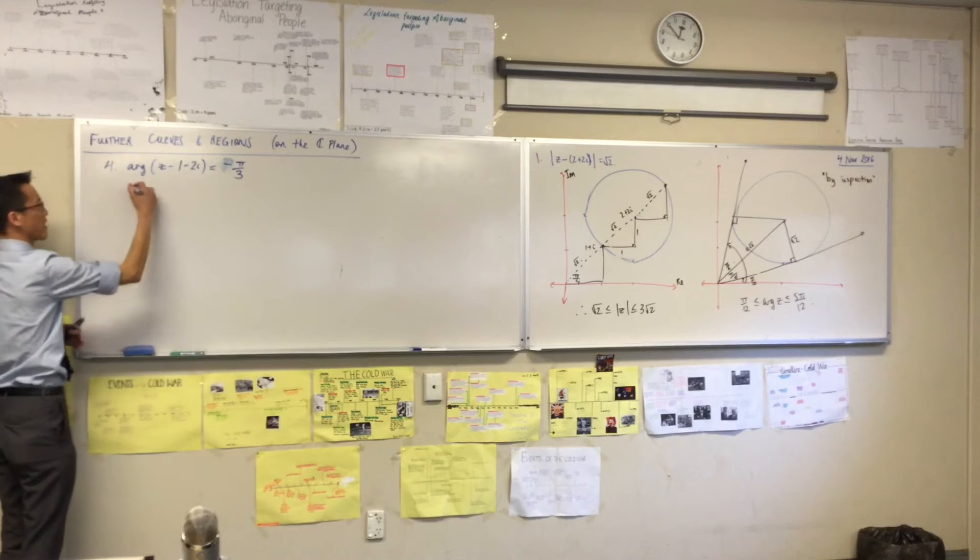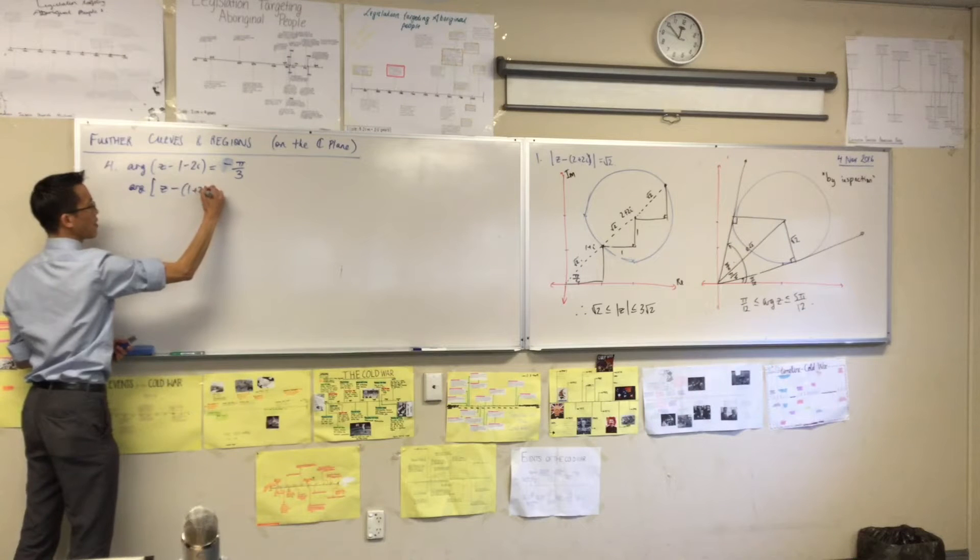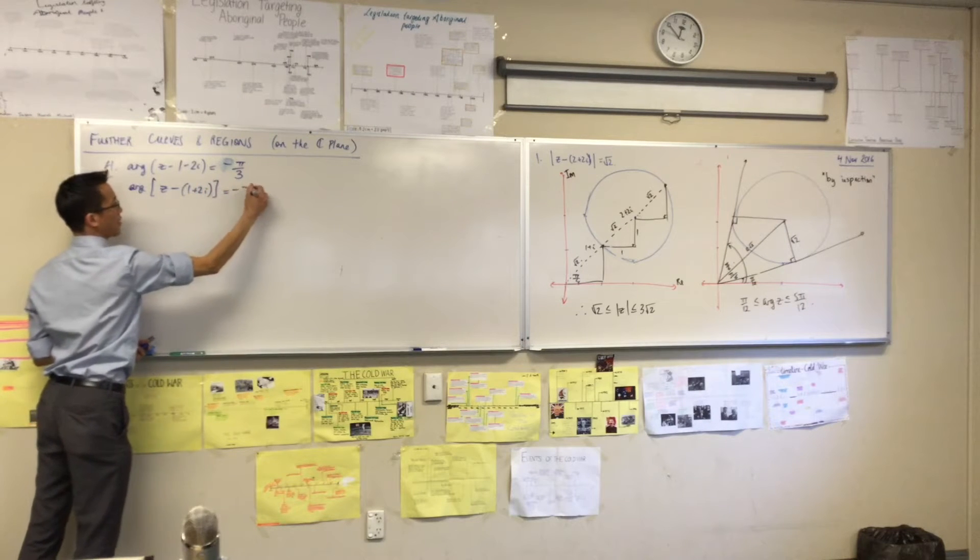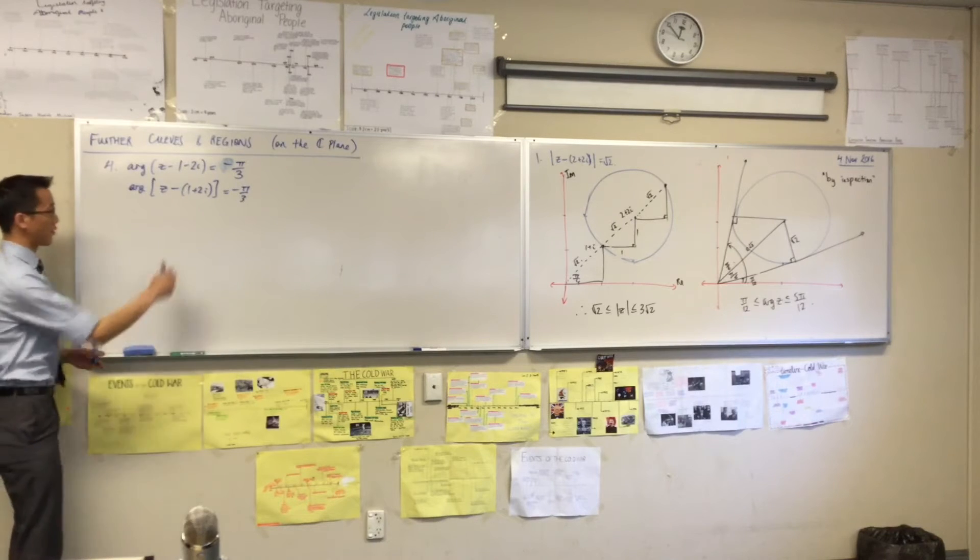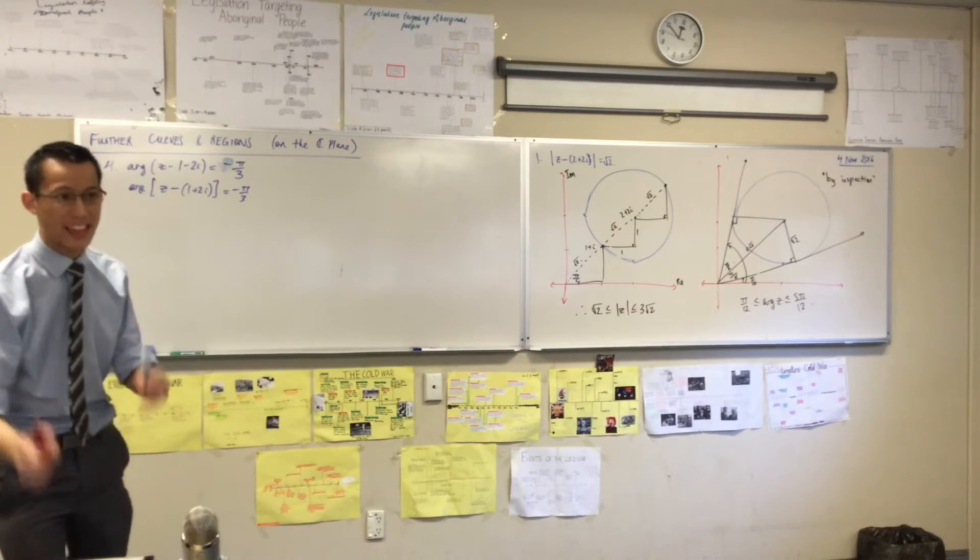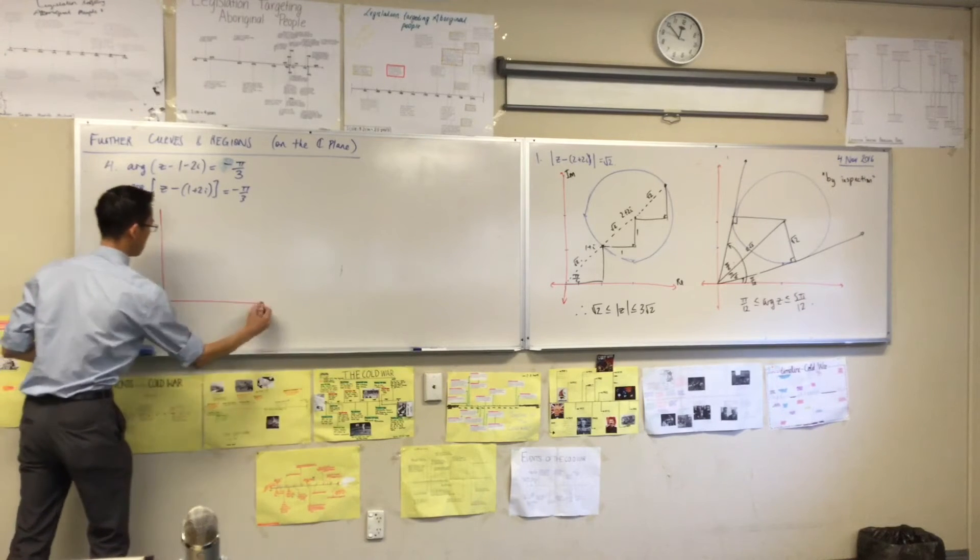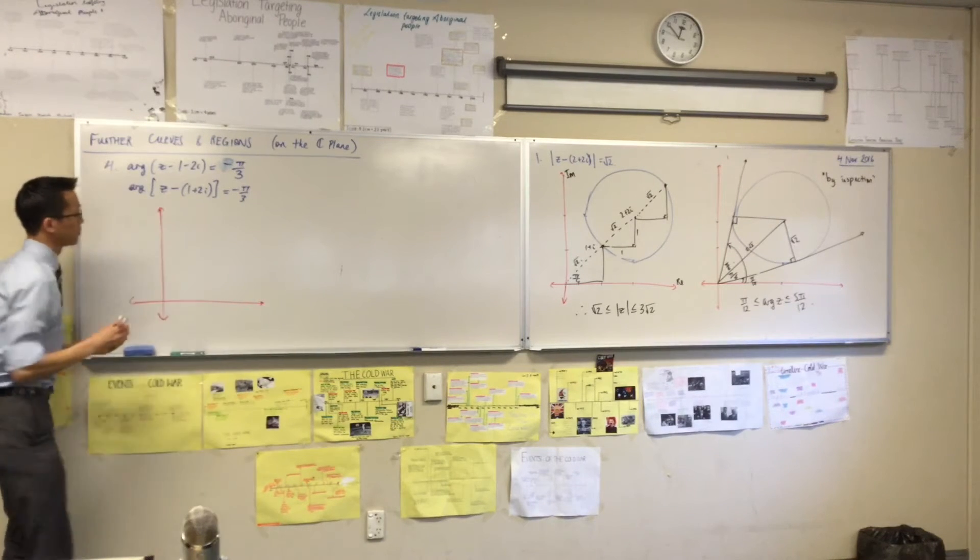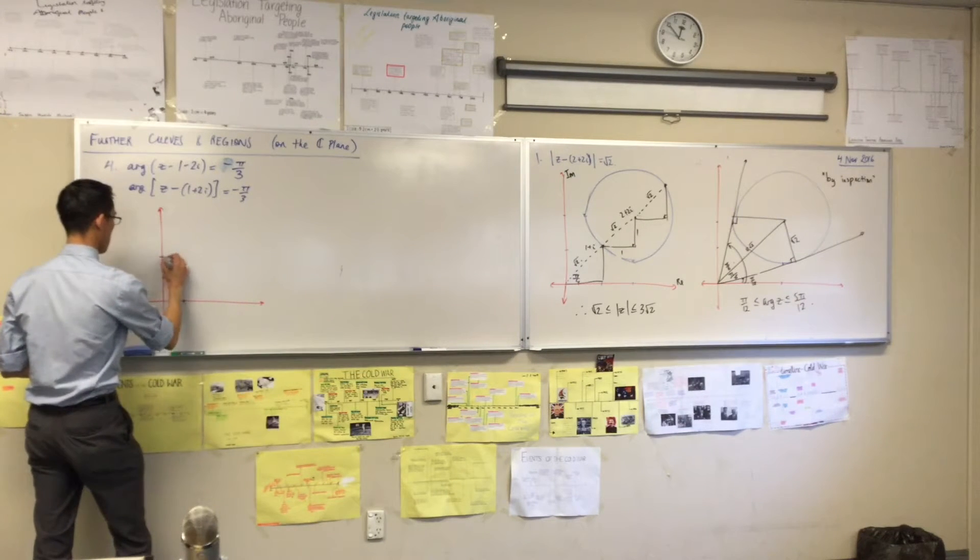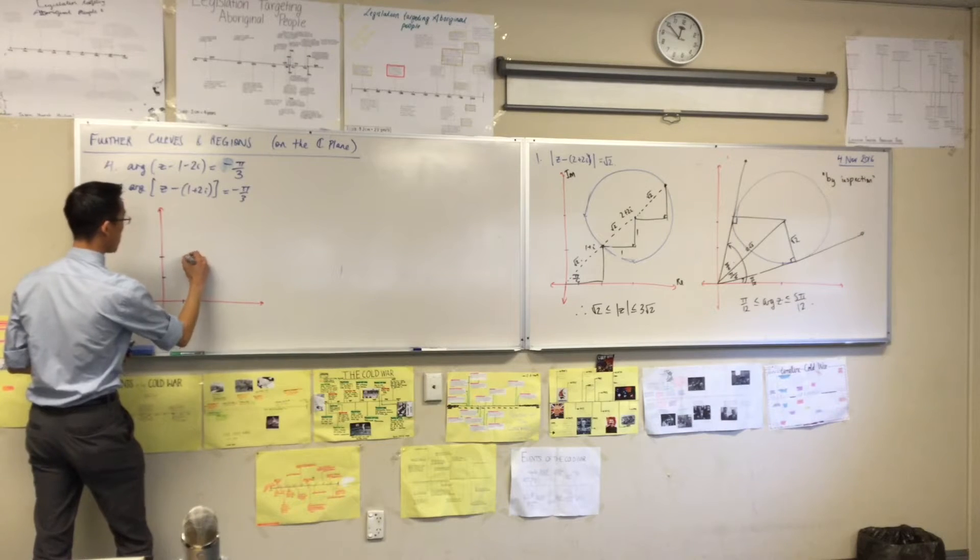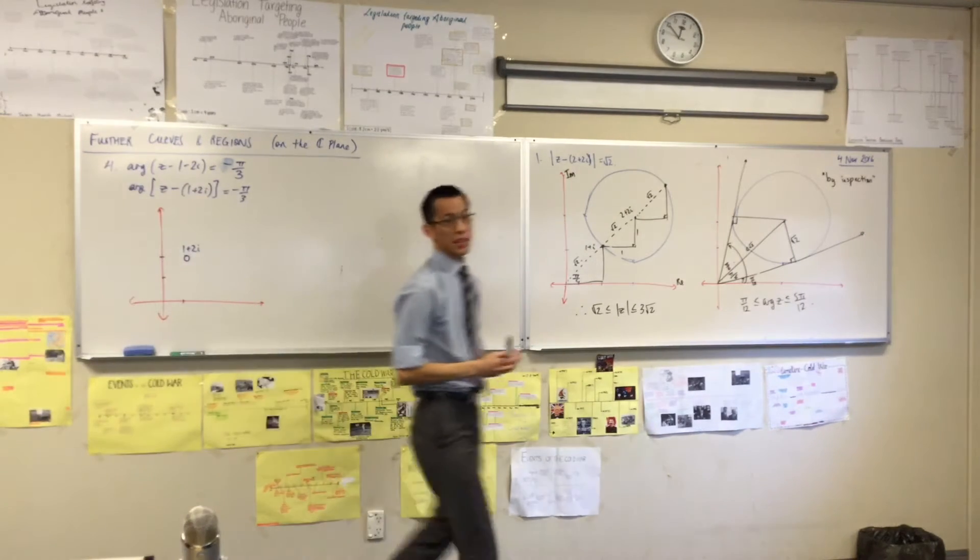So let's rewrite that to make it a little more obvious. Just like we did over there, it's the argument from that guy there. So this is actually not that hard. I just need to find out where that guy is, and then measure the argument from there. That's like, as it were, it's like my new origin. So let's draw this up. There's 1 plus 2i.